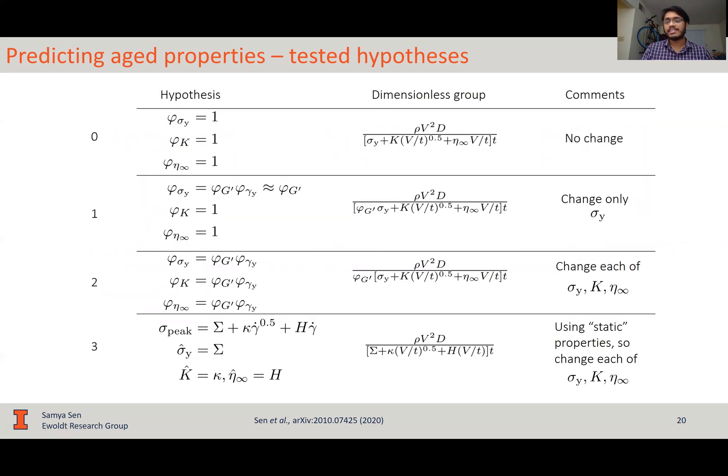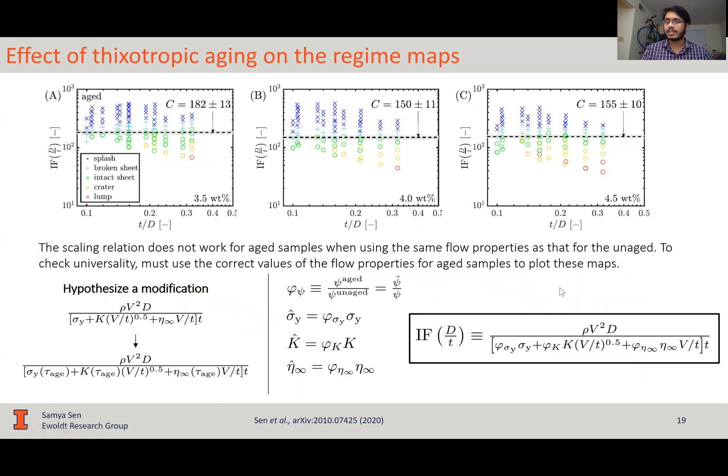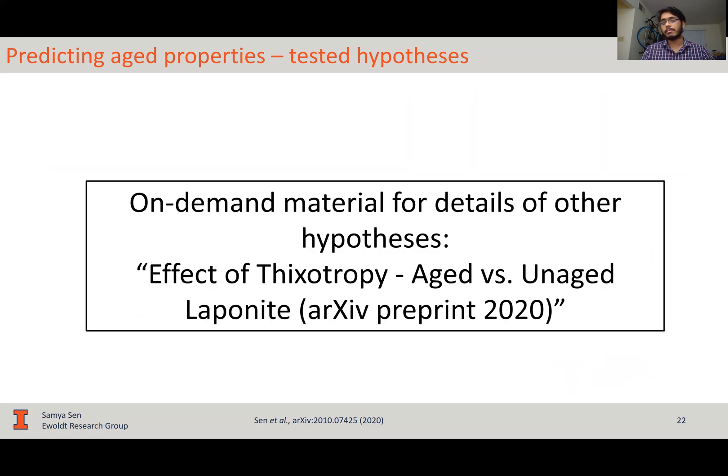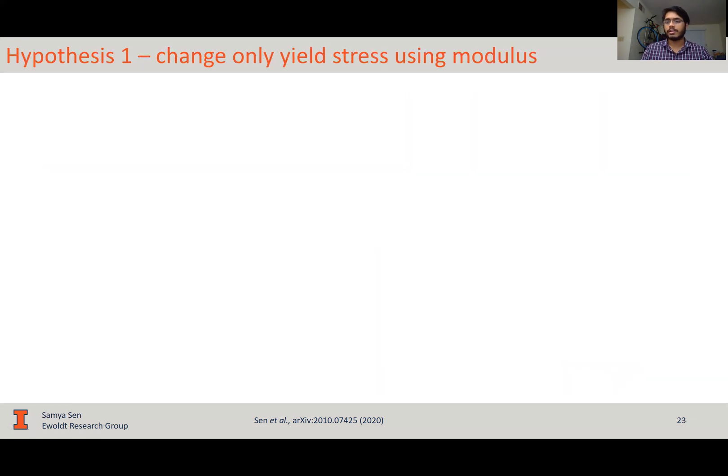Now, the challenge lies in determining these three factors. So, there are multiple hypotheses of how this can be done, but I'm only going to focus on one hypothesis, which was found to be the most credible one in our work, is that we only changed the yield stress based on a certain strategy. The details of the other hypotheses can be found in the online supplementary material, but I'll not be going through them. I'll only be focusing on the results of the first hypothesis, which was the most credible one, and it used the changing elastic modulus to modify the yield stress.